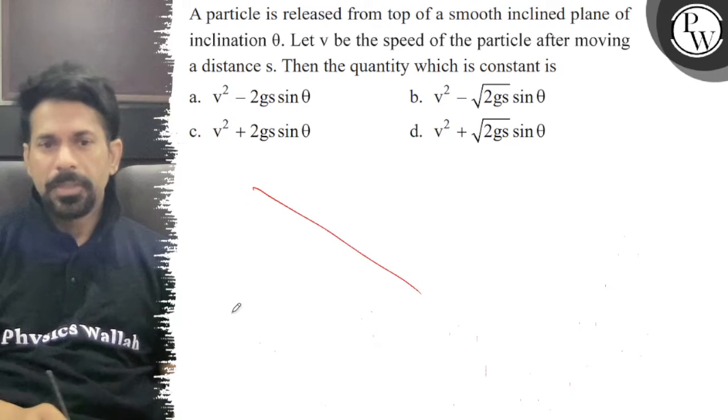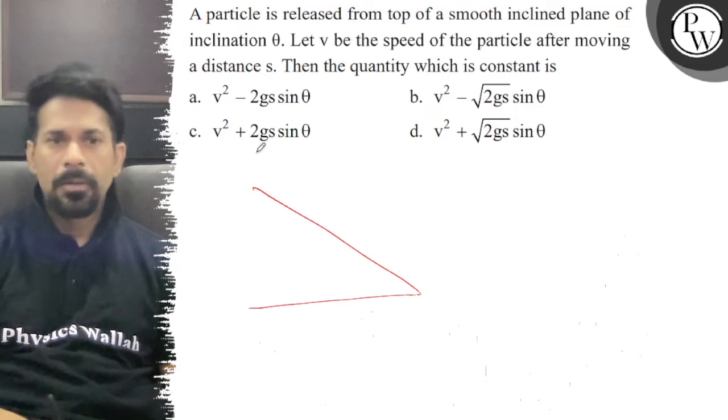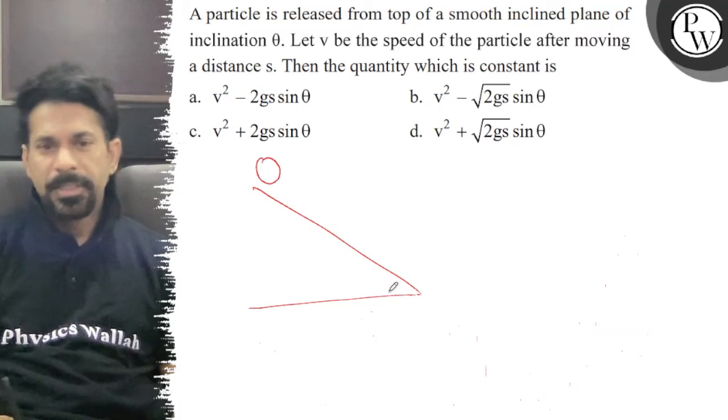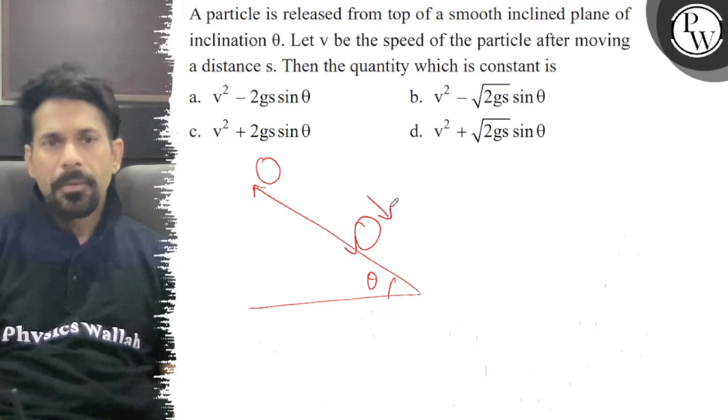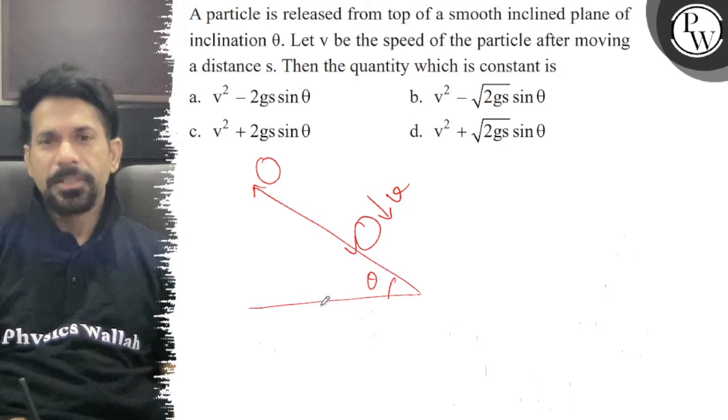So this is a smooth inclined plane. This inclination is theta. The quantity which is constant is.